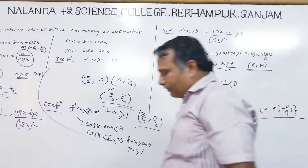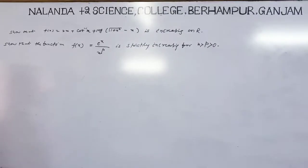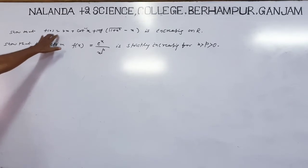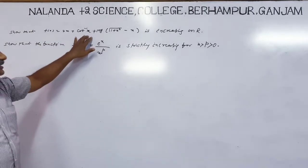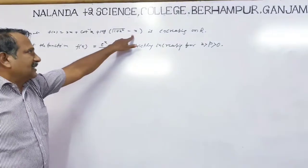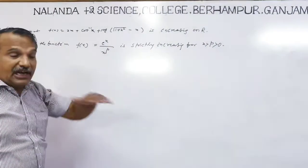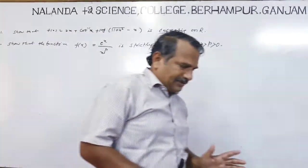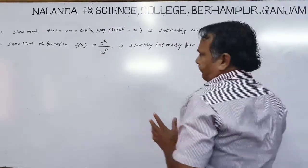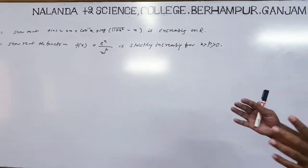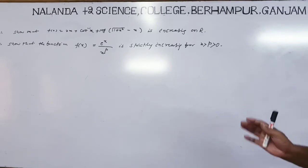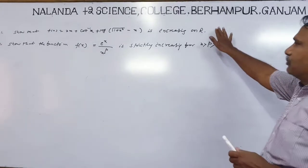Now another important example: show that the function f(x) = 2x + log(√(1+x²)) - x is increasing on all real numbers. This means f'(x) must be greater than 0 for all x.